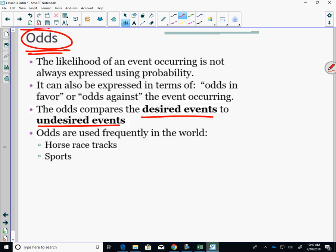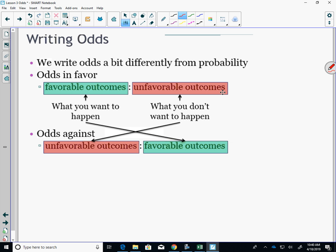So here's how you write the odds. We write odds a bit differently from probability. Odds in favor: favorable outcomes to unfavorable outcomes. See how it's written? What about odds against? Unfavorable, what you don't want to happen, to favorable outcomes, what you do want to happen. It's a little bit of a mind kind of shift, twist. And I will be honest, I'm having a hard time with it myself.